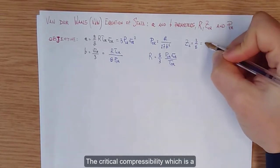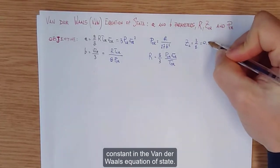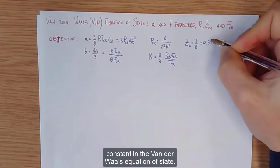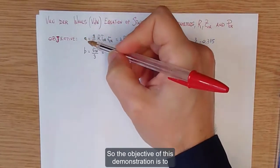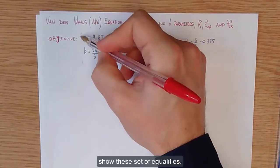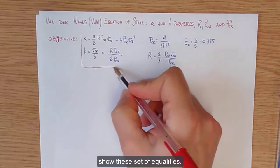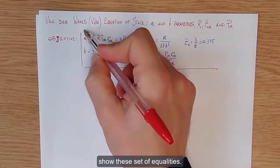The critical compressibility which is a constant in the Van der Waals equation of state. So the objective of this demonstration is to show this set of equalities.